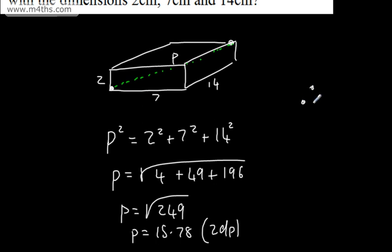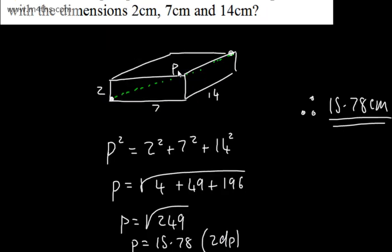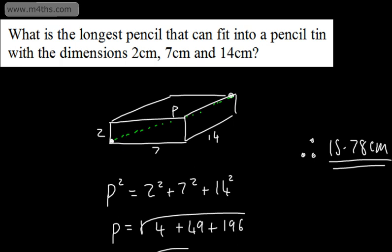So 15.78 centimetres will be the longest pencil. We should really round down, but to two decimal places that's 15.78. We're just looking at the diagonal of a box. So that's 3D Pythagoras - we're simply finding the missing length in a cuboid using A squared plus B squared plus C squared equals D squared.